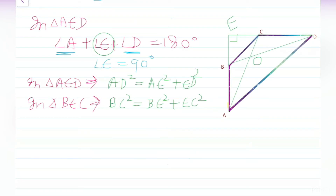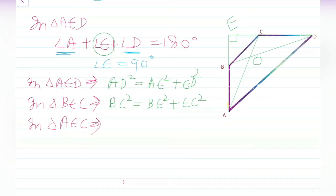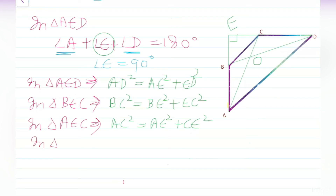There are two more triangles. In triangle AEC: AC² = AE² + CE². And in triangle BED: BD² = BE² + DE². So we now have four equations from the Pythagorean theorem applied to these four right-angled triangles all sharing the right angle at E.